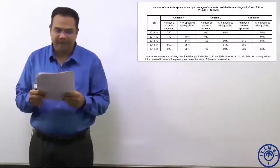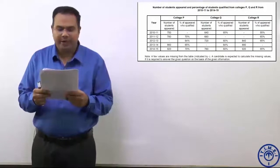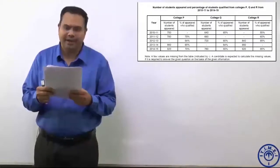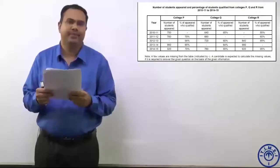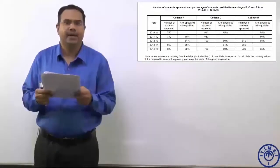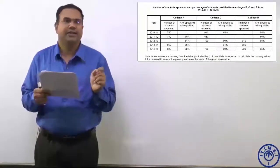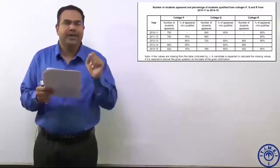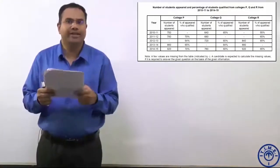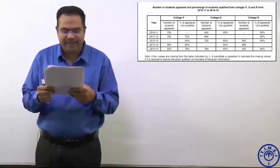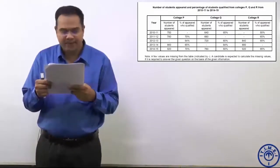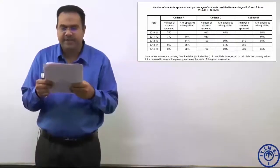Let us look at the next table. In this table, the number of students appeared and percentage of students qualified from colleges P, Q, and R from 2010-11 to 2014-15 is given. So there are three colleges P, Q, and R. Each year, the number of students appeared and number of students qualified is given. Now, in certain places there is a blank or a dash. Look at the note given — a few values are missing from the table indicated by dash or hyphen. A candidate is expected to calculate the missing values if it is required to answer the given question on the basis of the given information.